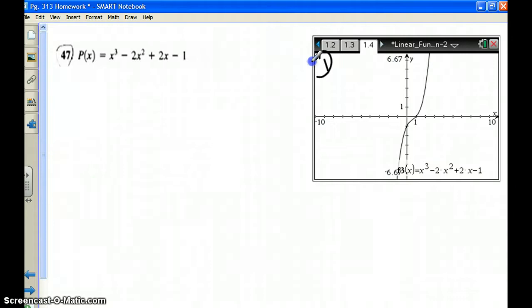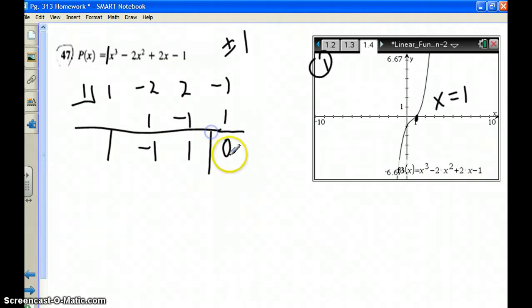Let's try another one. First step, graph it. By the way, if you do find all the possible p over q here, it's just plus or minus 1. Those are the only possible results. We have a solution x equals 1 here. So I'm going to synthetically divide out 1. 1, negative 2, 2, negative 1. We've got 1, 1, negative 1, negative 1, negative 1, 1. And add it up to get 0.